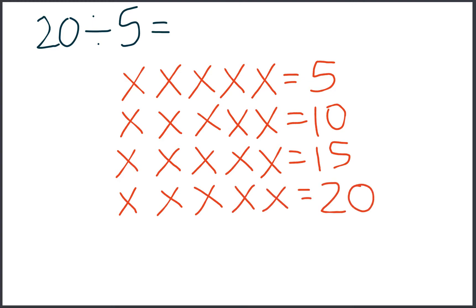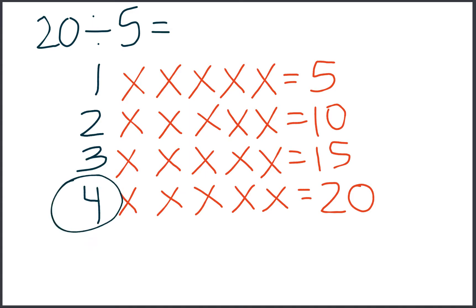So we have drawn all of our x's. We have divided 20 into rows of 5. And now we need to count how many rows we drew. So we drew 1, 2, 3, 4 rows. Which tells me 20 divided by 5 gives us a quotient of 4.